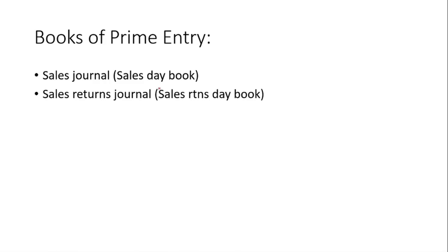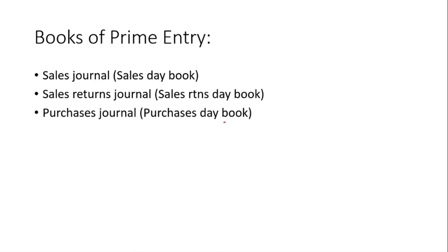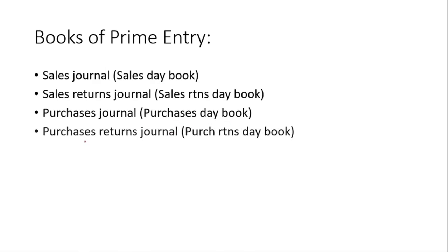The main Books of Prime Entry that you'll see are: the Sales Journal, also known as the Sales Day Book; the Sales Returns Journal, which is the opposite to the Sales Journal; the Purchases Journal, also known as the Purchases Day Book; Purchases Returns; the Cash Book; and the General Journal.